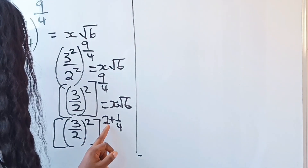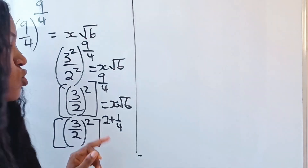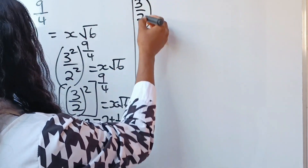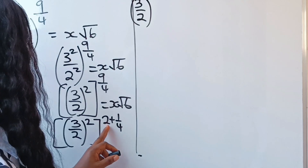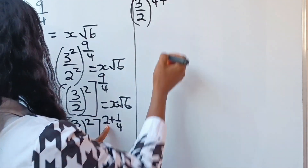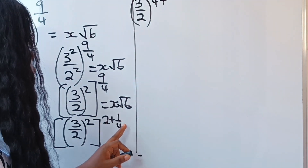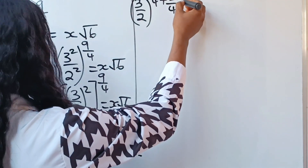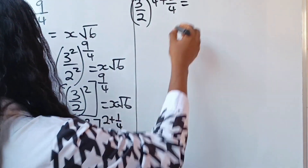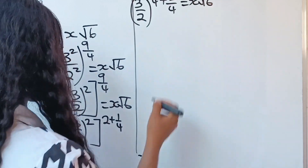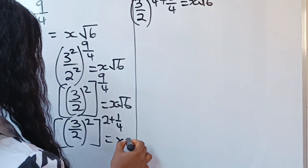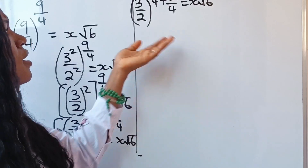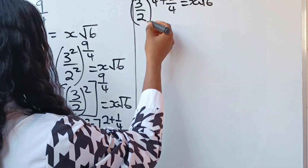We are going to multiply the exponents by 2, so it's going to be (3/2) raised to the power of 2 times 2, which gives us 4, plus 2 times 1/4, which is 2/4, equal to x root 6.